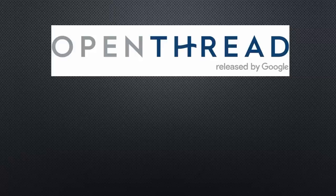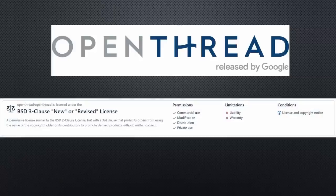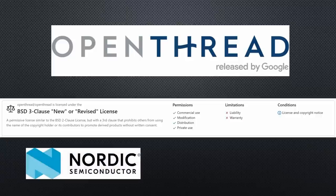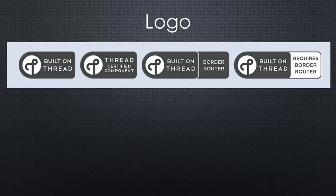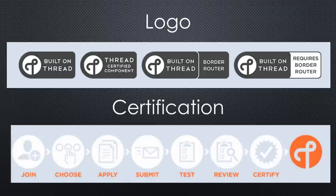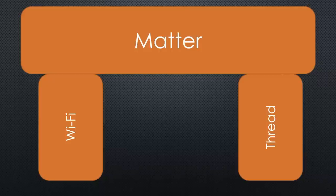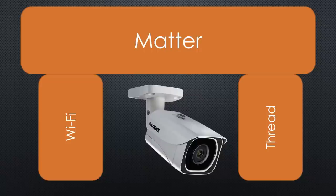A long time ago, Google created OpenThread with a very permissive open-source license. Others like Nordic Semiconductors or Espressif contributed to the project, and everybody can use it for their purpose without cost. Only if you want to use the Thread logo must you pass tests and pay a fee. Matter can also integrate Wi-Fi devices in addition to Thread devices. The probably most important device class using Wi-Fi in home automation is cameras — they produce much network traffic that Thread cannot handle, and cameras do not need to sleep, so Wi-Fi is the perfect physical layer.